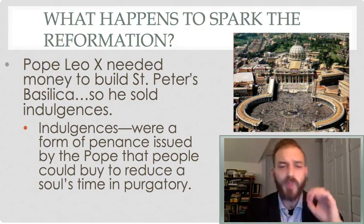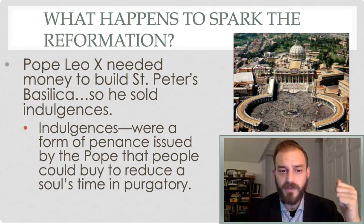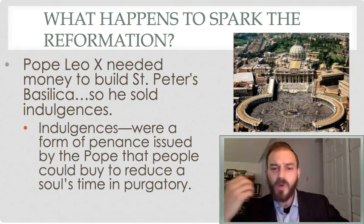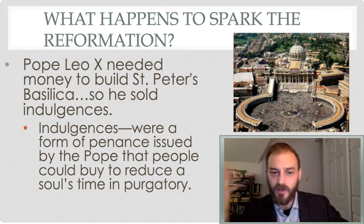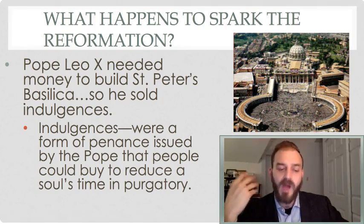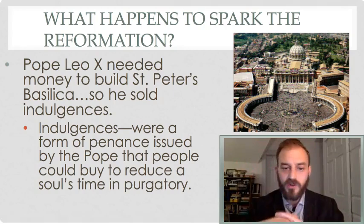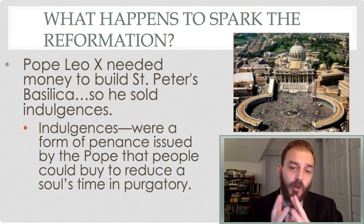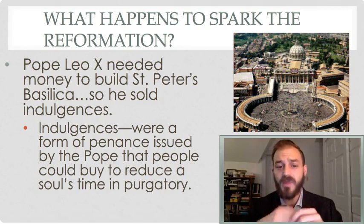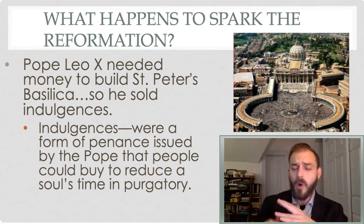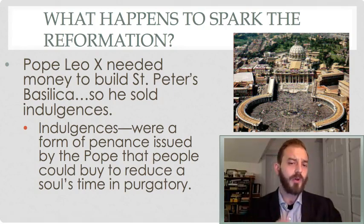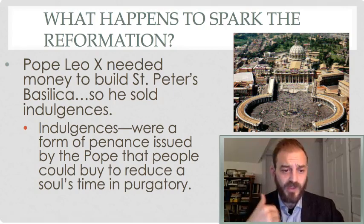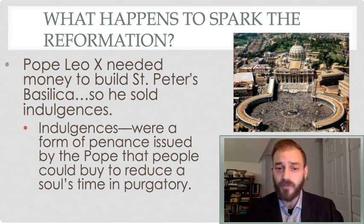The event that ultimately sparked the Reformation came about because of Pope Leo X. Leo needed money — there was an effort in Rome to rebuild St. Peter's Basilica. To hire Renaissance artists, acquire marble, and bring craftsmen from across Europe, the Pope decided to sell indulgences. An indulgence was a form of penance issued by the Pope that people could buy to reduce a soul's time in purgatory, either their own or a relative's. To understand how an indulgence worked, we need to look at the medieval view of salvation and how the church functioned as the mediator of God's grace.